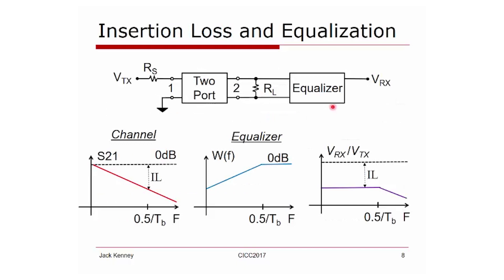Here is your typical channel. Our wires are modeled as lossy two-port. You can think of VTX as being the output of the transmit flip-flop. VRX is headed towards the flip-flop in the receiver.